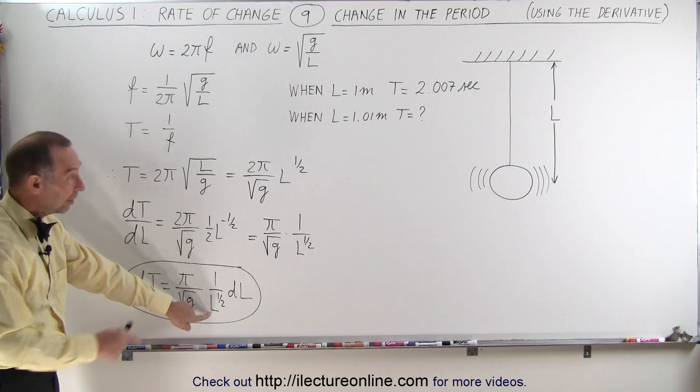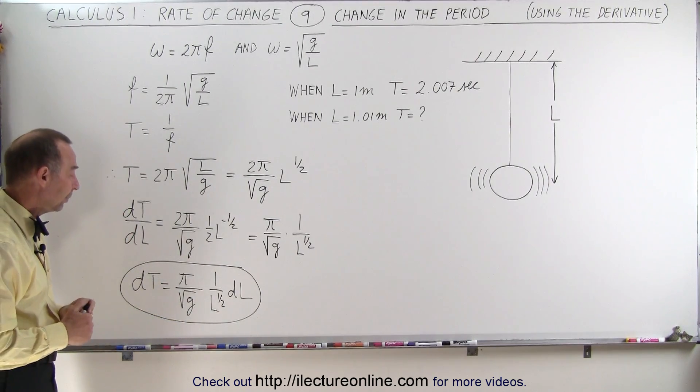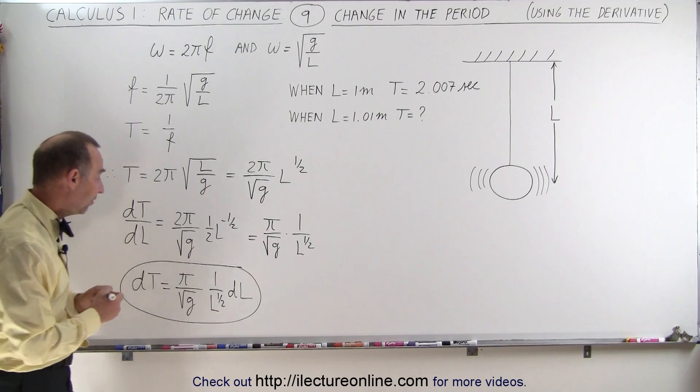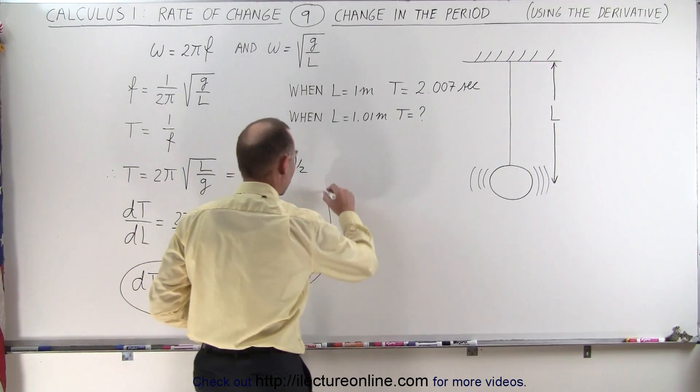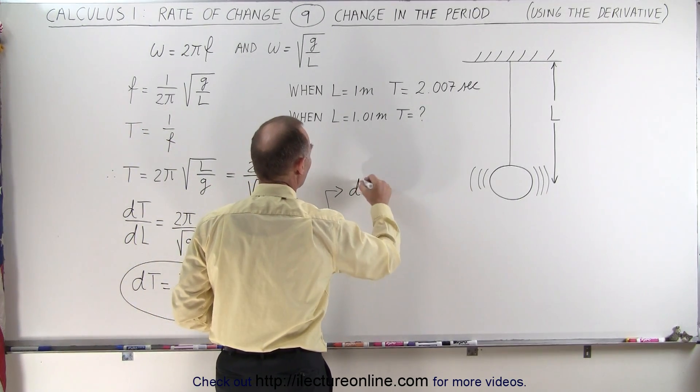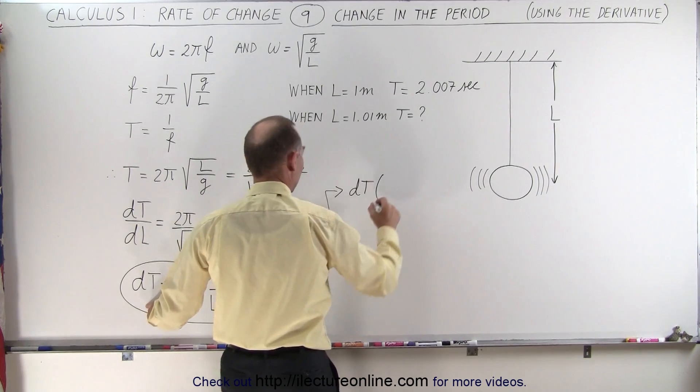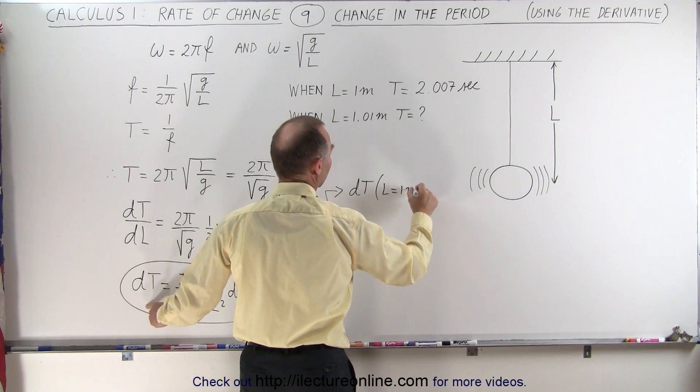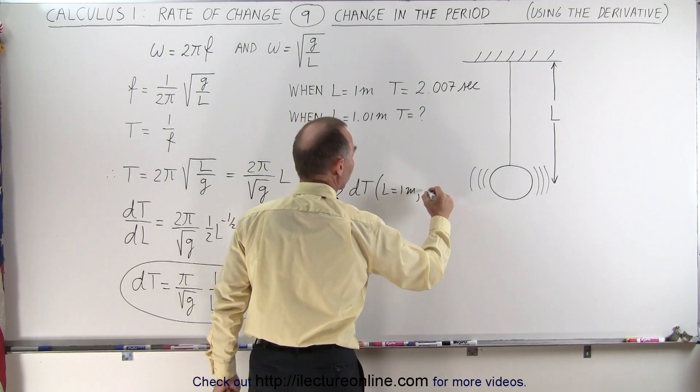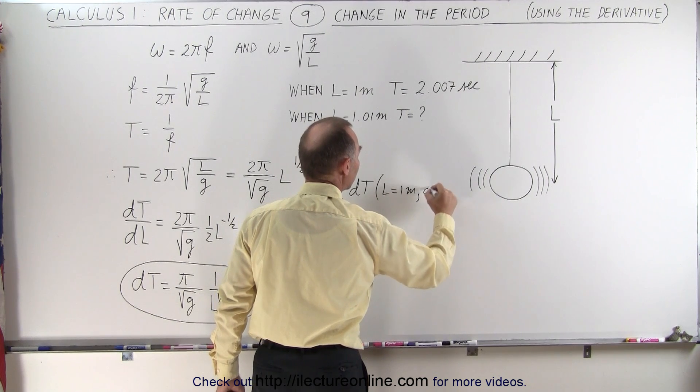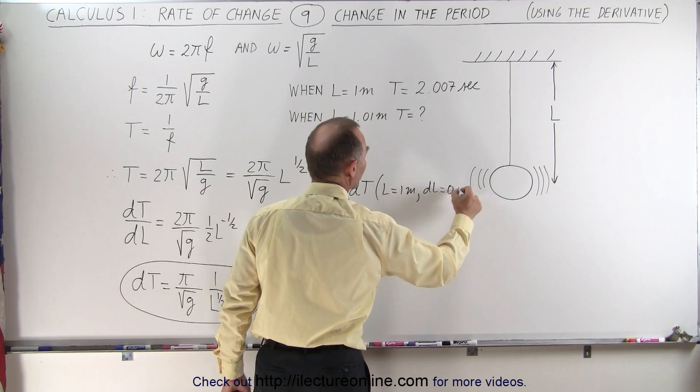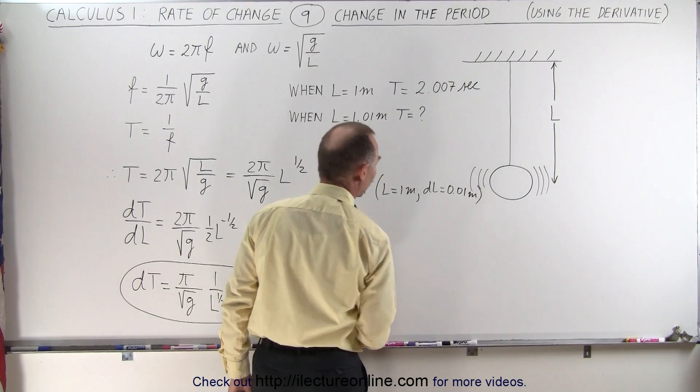Assuming that we know what L is, and in this case we know L is 1 meter. So let's go ahead and plug the values in and see what we get. So here we're going to find the change in the period when L is equal to 1 meter and the change in L, the dL, is equal to 0.01 meter. So that's what we're trying to find.